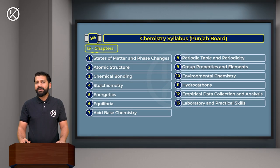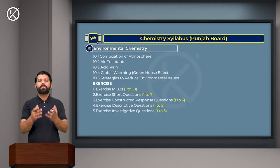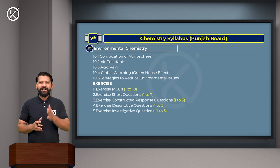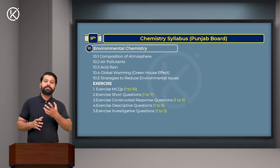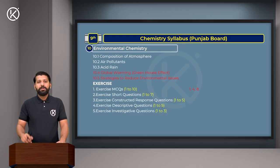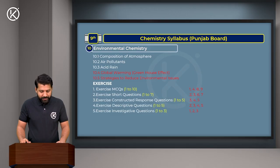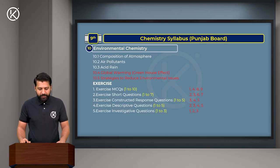Chapter 10 is Environmental Chemistry. You will study the different components of the environment and the effect of human activities on it, including harmful activities that have adverse effects. The excluded topics are 10.4 - Global Warming and the Greenhouse Effect, and 10.5 - Strategies to Reduce Environmental Issues. Excluded questions: MCQs 1, 4, 8, and 9; Short Questions 2, 3, 6, and 7; Constructive Response Questions 3, 4, and 5; Descriptive Questions 2, 3, 4, and 5; and Investigative Questions 1, 2, and 3.